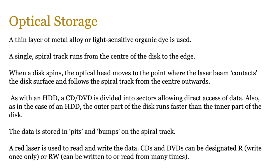As with an HDD, CD-DVDs split into sectors and tracks which allow direct access of data. The outer part of the disk runs faster than the inner part — because outer tracks are longer, you need to spin slightly more to maintain the same time frame. Data is stored in pits and bumps on the track. A red laser is used to read and write data for CDs and DVDs, while Blu-ray uses a blue laser. There are different formats: R means write-once — CD-ROM is written by the manufacturer and can't be changed, CD-R or DVD-R can only be written once, and the RW variety can be written and read from multiple times.